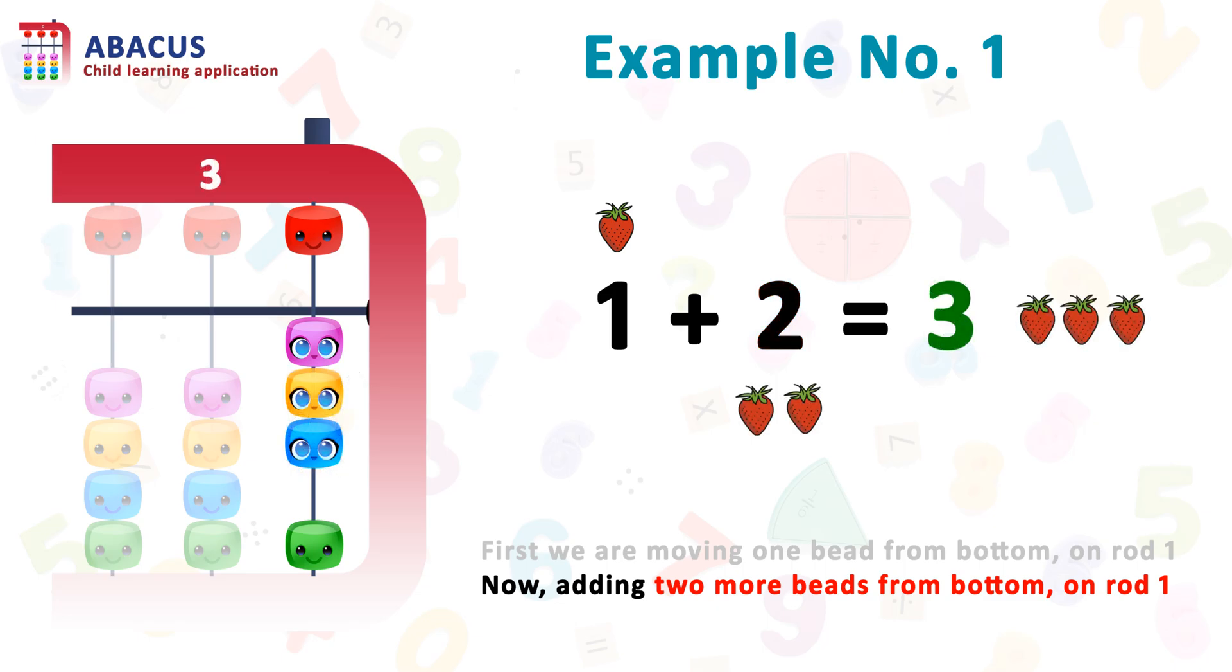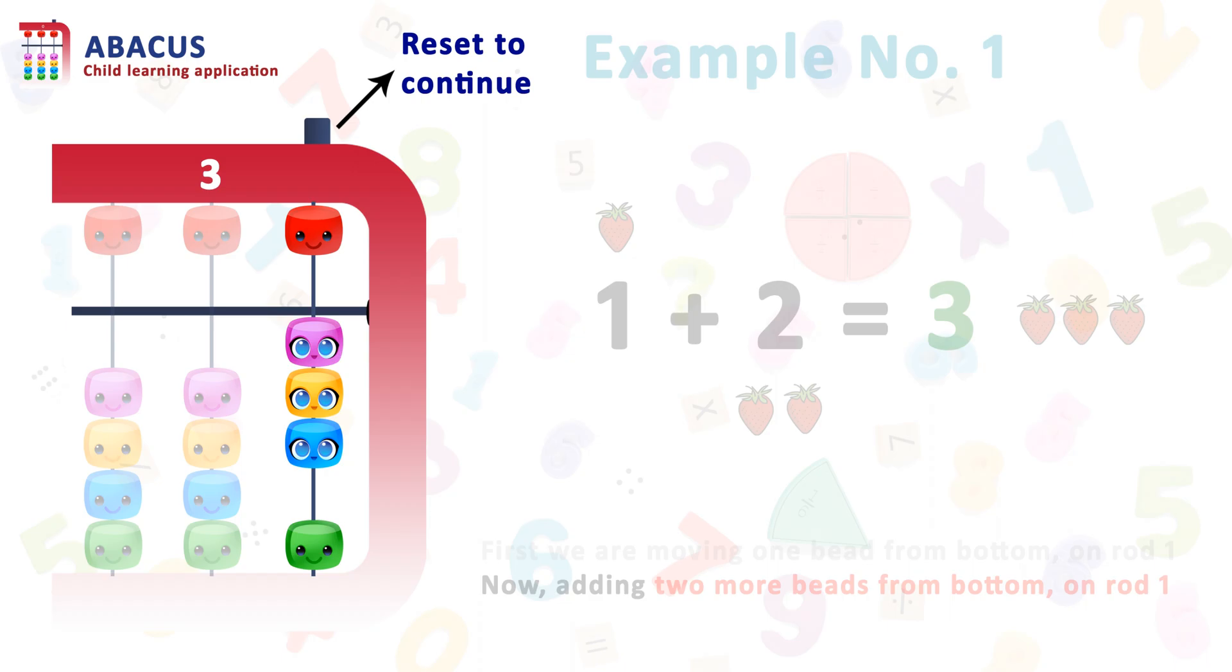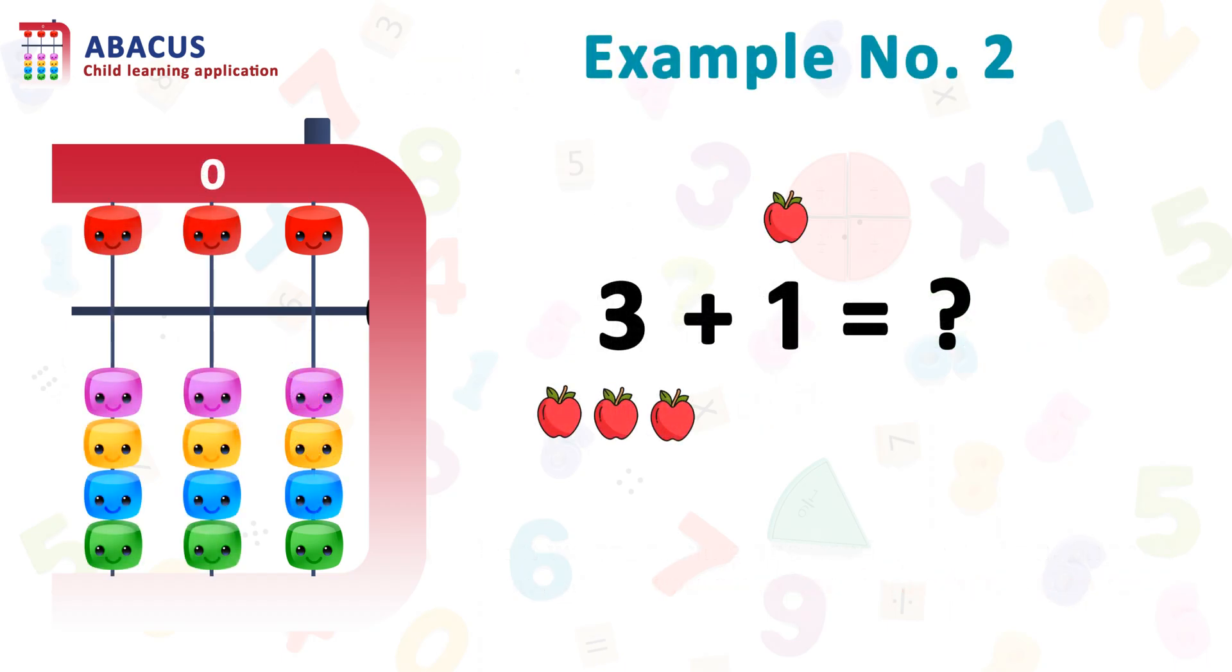And you got the number three strawberries. For the next example, we have to reset the abacus. To reset the abacus, press the top right button. So let's reset and continue.